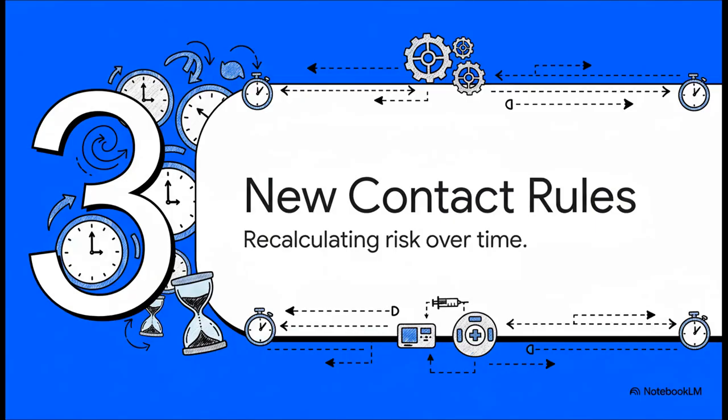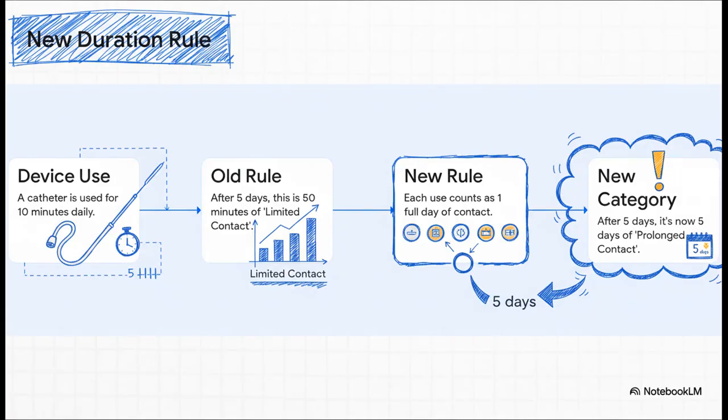Okay, next up, let's talk about time. Because the way we calculate contact duration is being completely overhauled. And trust me, this has massive, massive implications for how devices get categorized and what tests they'll need. Just look at this example. It's so clear. Under the old rules, if you used a catheter for 10 minutes a day for five days, well, that's 50 minutes total. Simple. Limited contact.